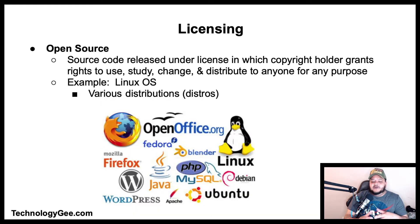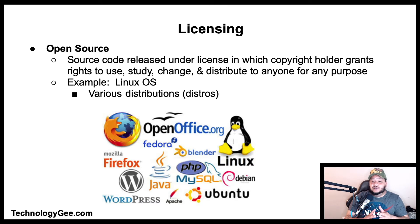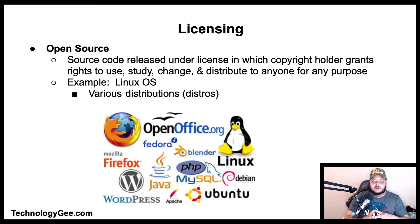Open source software is a type of computer software in which source code is released under a license where the copyright holder grants the right to use, study, change, and distribute the software to anyone and for any purpose, including being sold. However, open source licenses require that sellers not limit the rights of purchasers to use, change, or share the software. The Linux operating system is an example of open source software, available in a variety of distributions known as distros.